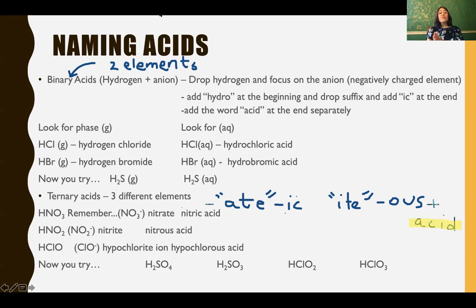For ternary, we have three different elements. So remember your polyatomic ions that we memorize, the common ones. So if you see that a polyatomic ion ends in ate, like nitrate, you're going to cross that out and put ick, you have ick acid. And then if you have a polyatomic ion that ends in ite, you cross that out and write us and it will be us acid. So a good way to remember this is I ate so much ick, right? I ate so much fast food, ick. I don't feel so well.